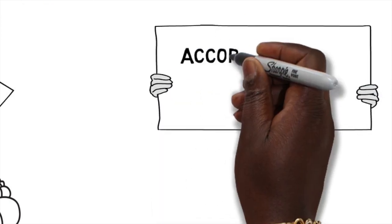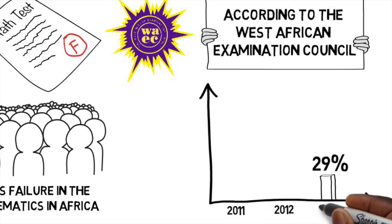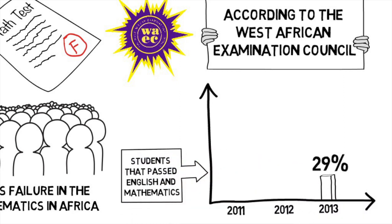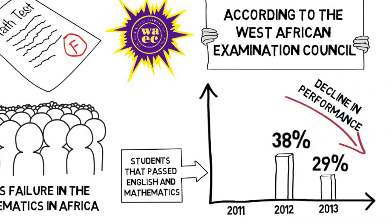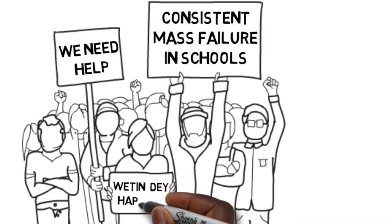According to the West African Examination Council, WAEC, only 29% of students who sat for the 2013 exams had a passing grade in English and mathematics. Results show a decline in students' performance when compared to 38% in 2012 and 37% in 2011. This consistent mass failure in schools warranted a response.